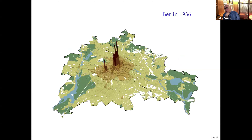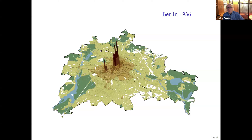Starting with Berlin. This illustrates the type of data these models can cope with. This is the distribution of land prices in Berlin in 1936, before the Second World War, normalized to a mean land price of one. You can see the highest land prices were in the very center of the city in an area called Mitte, which became part of East Berlin. But there's a complicated pattern of concentric rings of progressively lower land prices around that central area — the monocentric city model is only an approximation.